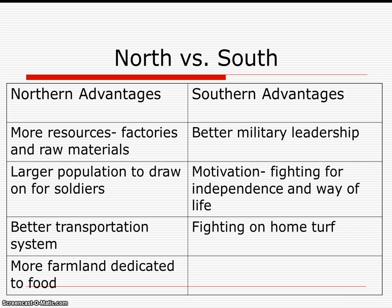Looking at the sides of the war and comparing them, your northern advantages include that they have more resources — specifically more factories and raw materials. They have a larger population to draw on for soldiers and definitely better transportation systems. Railroads were growing a lot more in the North and West, so transportation systems are going to really aid the North in this war. They also have more farmland dedicated to food, whereas cotton is king in the South.